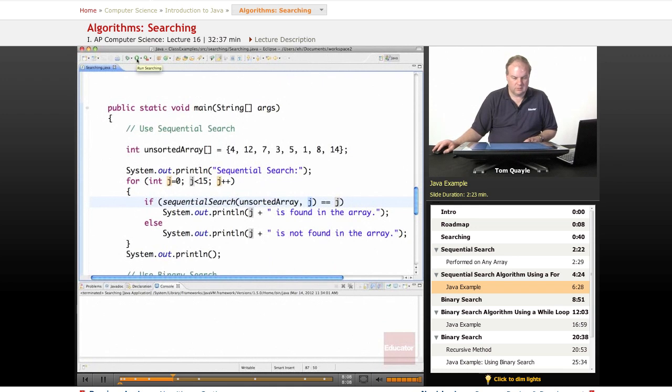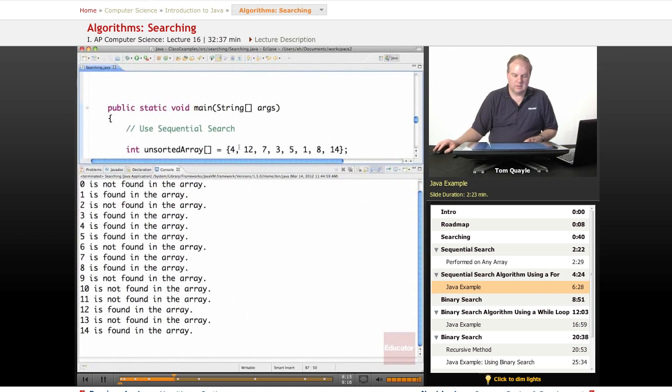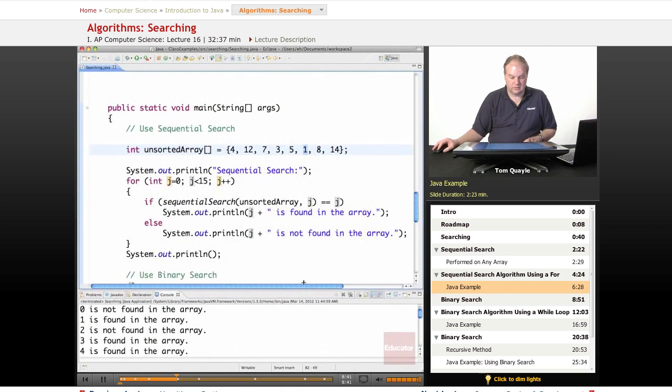So, let's run this. And I'll expand this. And here we can see the values in the array and the results of doing this sequential search. It tells me that zero is not found in the array. And that's true. Zero is not one of the elements in my unsorted array. One is found in the array. That was right here. Two is not found. Three, four, and five are found in the array. And so on. So, it did work exactly as I wanted it to.